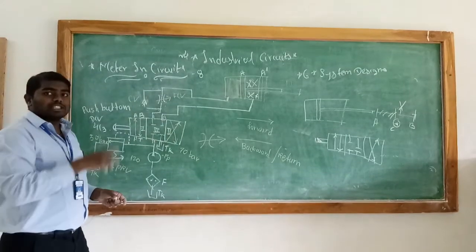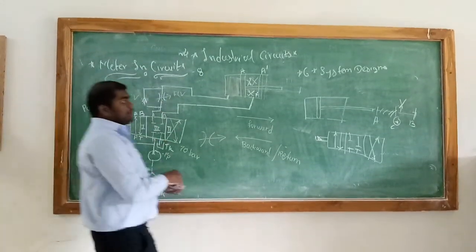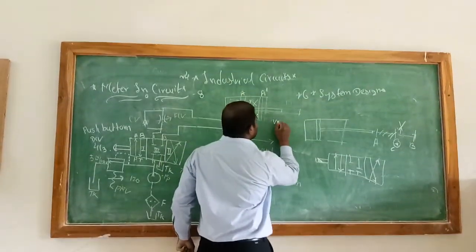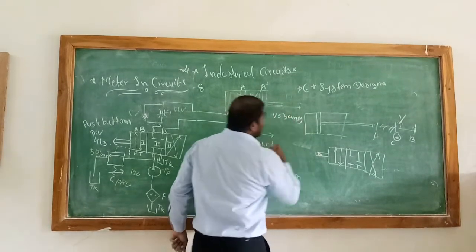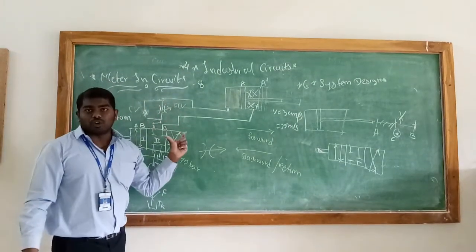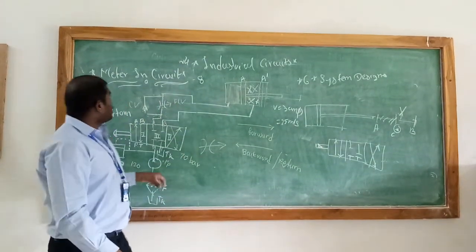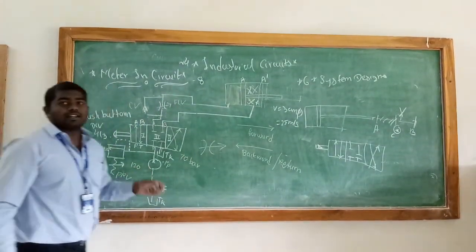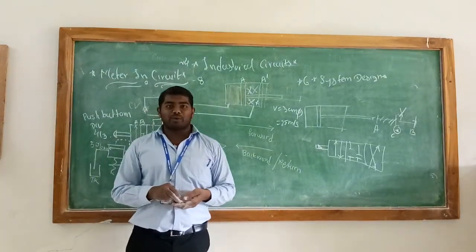So this is for the meter-in circuit. Similarly, we have to change the check valve and flow control valve to opposite place. So it will be the meter-out circuit. So this is the meter-in and meter-out circuit. The application is to control the system motion. Means if your slow speed is 30 meter per second, you will get it. If you want 20 meter per second, you will get it by controlling the fluid flow. So this is all for the meter-in circuit. Thank you for watching my video. Thank you.